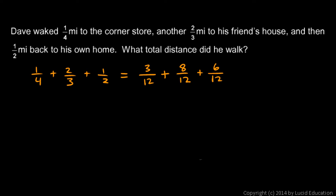So this problem—1/4 plus 2/3 plus 1/2—is the same thing as 3/12 plus 8/12 plus 6/12. Let's add those up: 3 plus 8 is 11, plus 6 is 17, so it's 17/12.